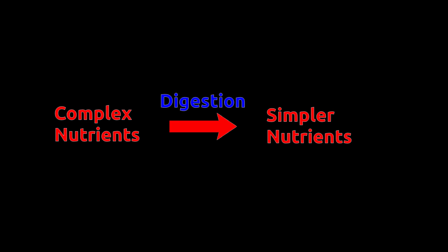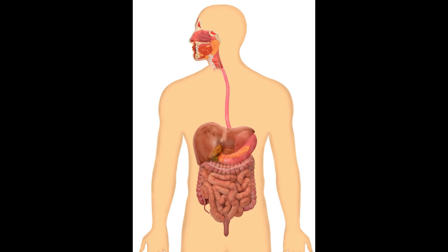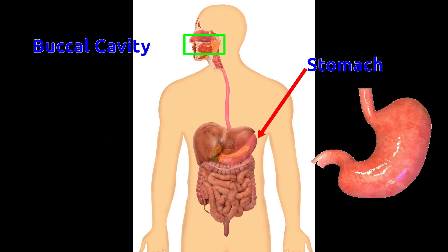Digestion is a process by which food is broken into smaller and simpler components. Digestion takes place at the buccal cavity, stomach, and small intestine.